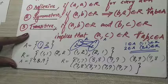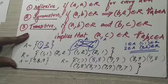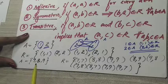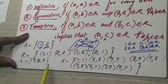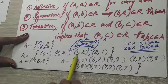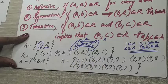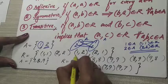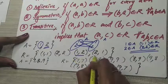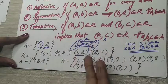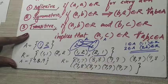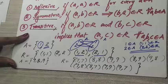Next is symmetric. In symmetric, if (1,2) is in the relation then (2,1) should also be in the relation. Here (1,2) is there, and changing the order gives (2,1) which is also in the relation. So we can say that this relation is symmetric.